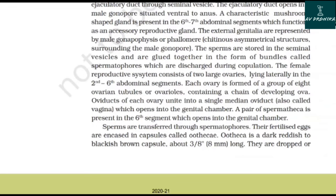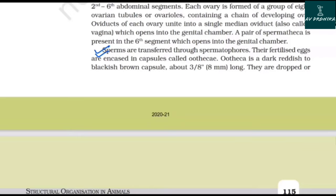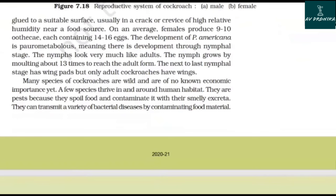The female reproductive system consists of two large ovaries lying laterally in the 2nd to 6th abdominal segments. Each ovary is formed of a group of 8 ovarian tubules or ovarioles containing a chain of developing ova. Oviducts of each ovary unite into a single median oviduct, also called the vagina, which opens into the genital chamber. A pair of spermathecae is present in the 6th segment, also opening into the genital chamber. Sperms are transferred through spermatophores. Fertilized eggs are encased in capsules called oothecae — dark reddish to blackish brown capsules about 8 mm long. They are dropped or glued to a suitable surface, usually in a crack or crevice of higher relative humidity near a food source.